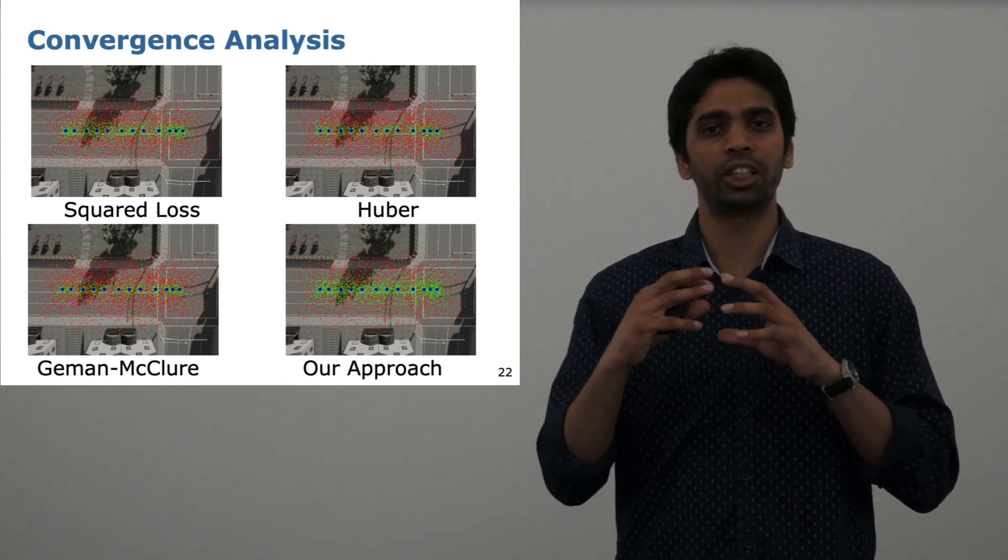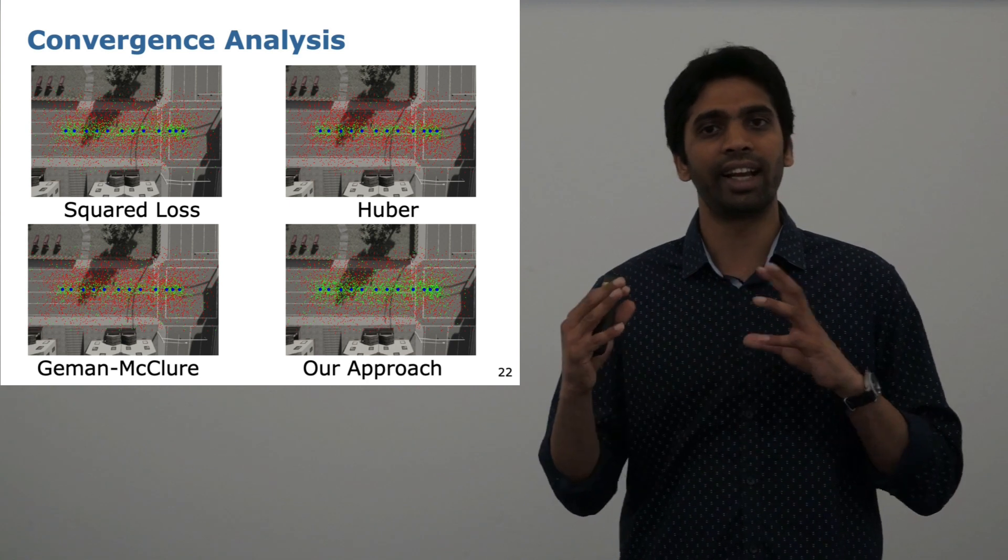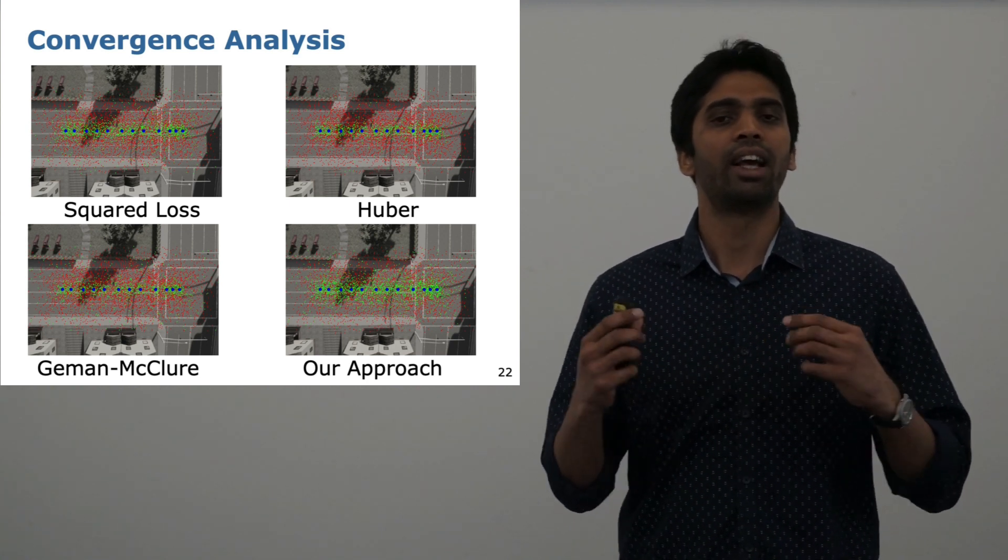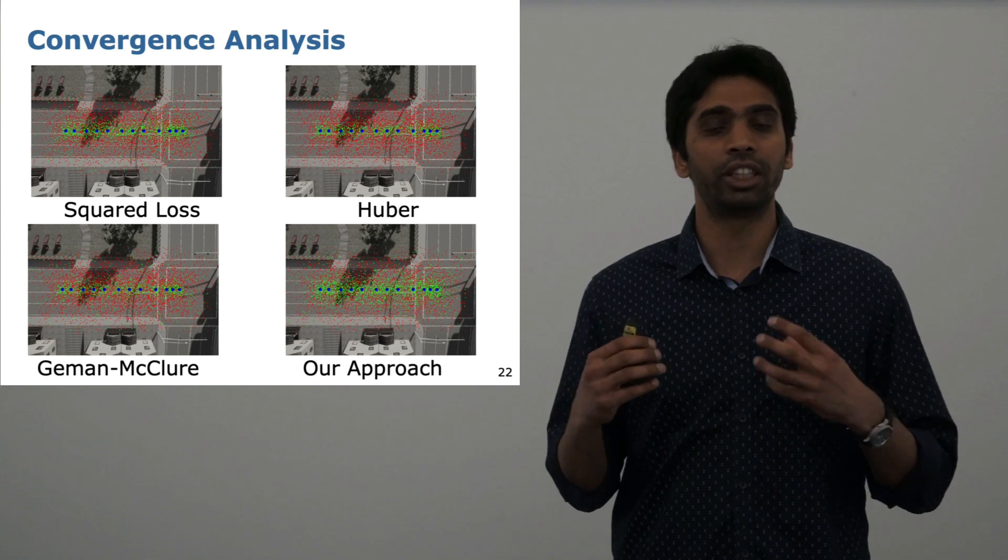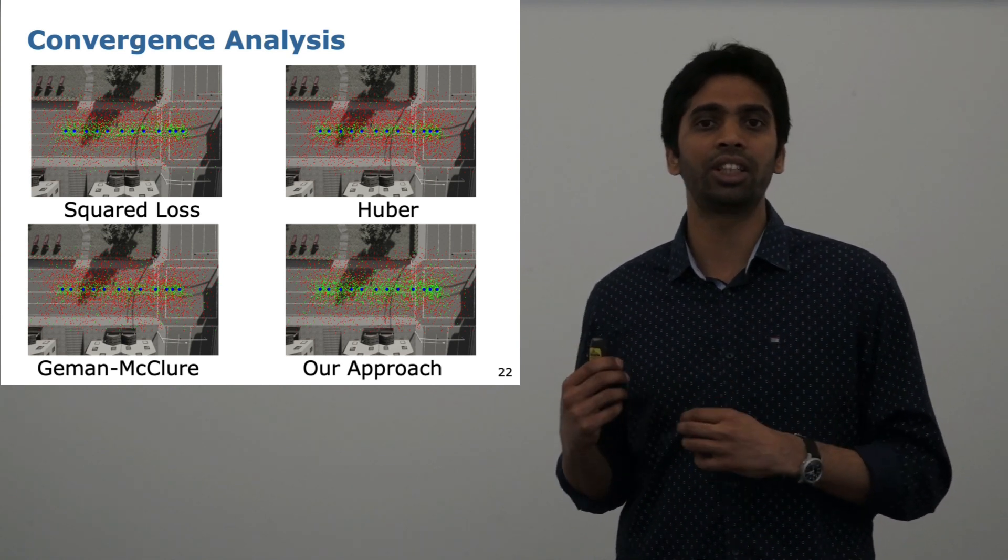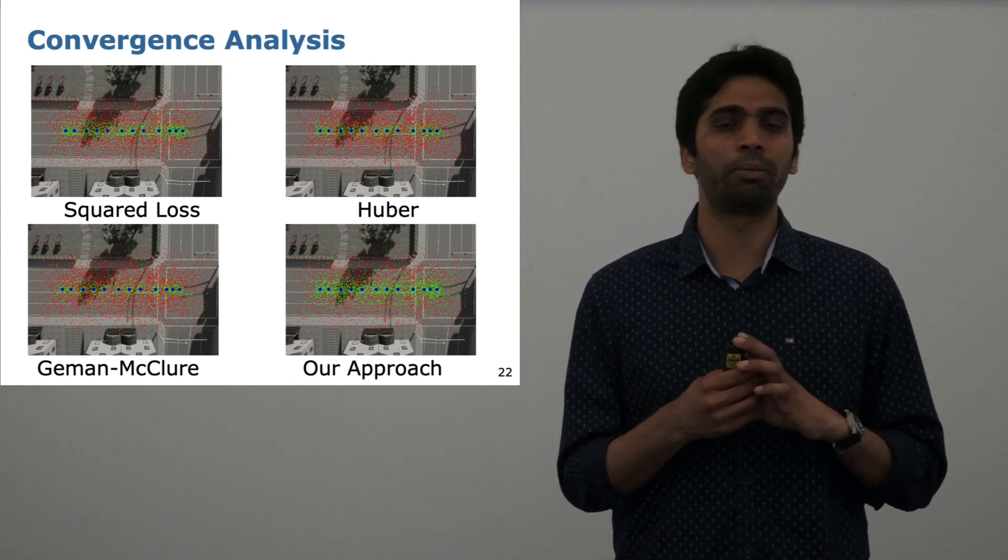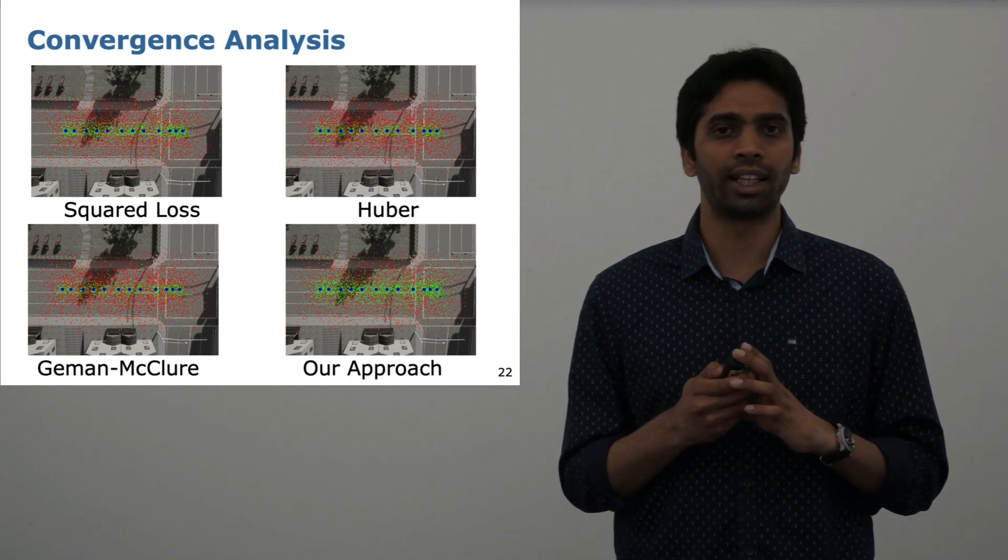As you see in our approach, the spread of this green area is the largest, effectively communicating that the area of convergence or the basin of convergence is larger using the loss function we proposed as compared to other fixed loss functions that are there.